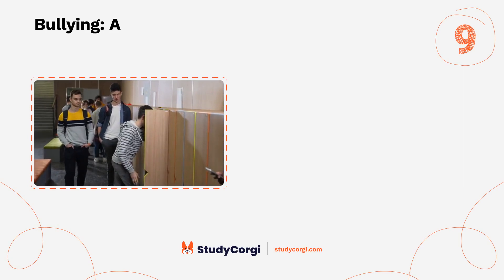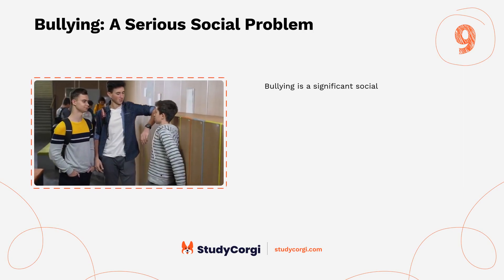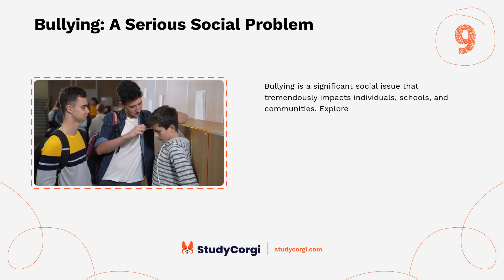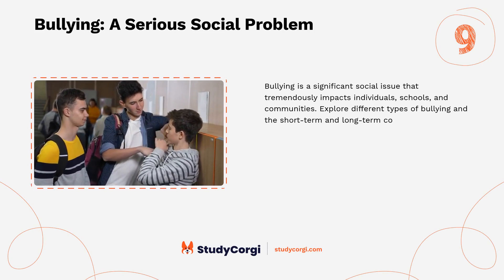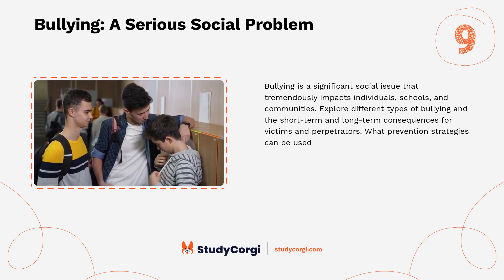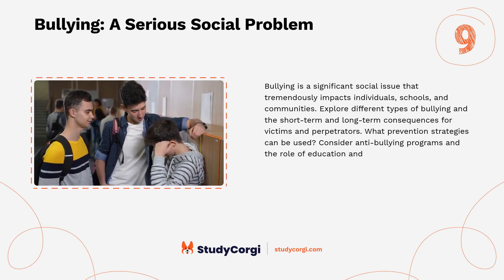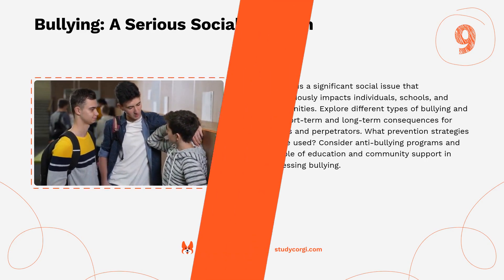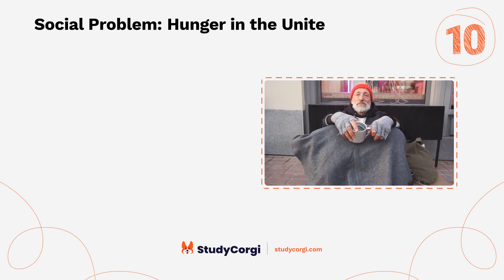Bullying: a serious social problem. Bullying is a significant social issue that tremendously impacts individuals, schools, and communities. Explore different types of bullying and the short-term and long-term consequences for victims and perpetrators. What prevention strategies can be used? Consider anti-bullying programs and the role of education and community support.